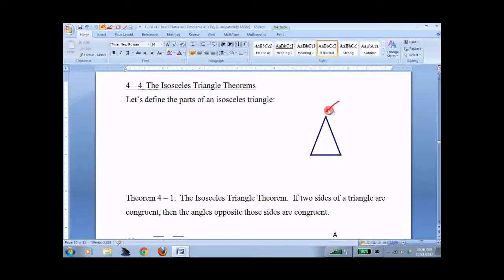So this is called the vertex. And down in here is called the vertex angle. Each one of the two sides that are congruent, an isosceles triangle has two parts that are congruent. These are called the legs. This is called the base.